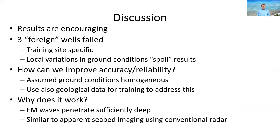What can we learn from this? We believe these results are very encouraging given the potential high economic impact. We are encouraged to pursue and improve this further. The three foreign wells failing supports the idea that fairly constant geology is required for the approach to separate temperature from geological features. Local variations in ground conditions tend to spoil the results. This problem could be solved by injecting extra geological features into the learning process — meaning the neural network should receive geological data in addition to radar data. How to do this exactly is unclear, but we are working on it.